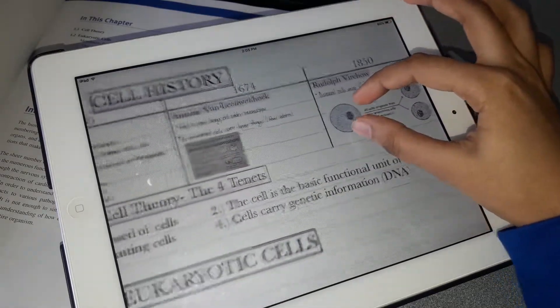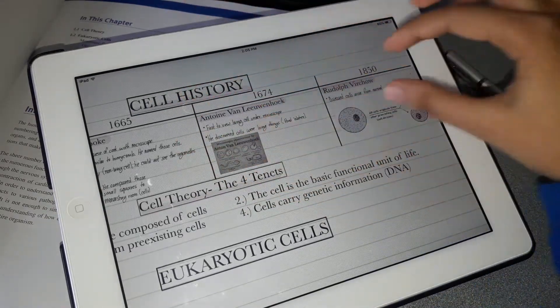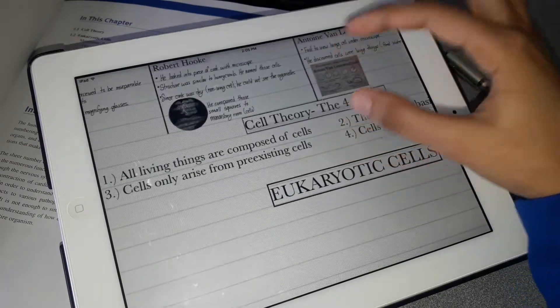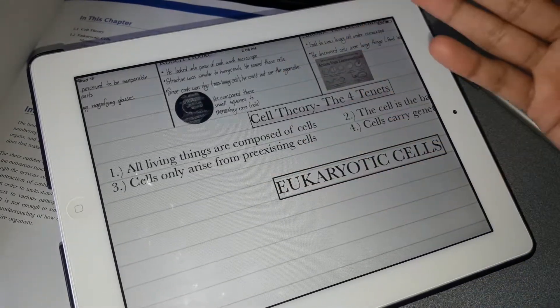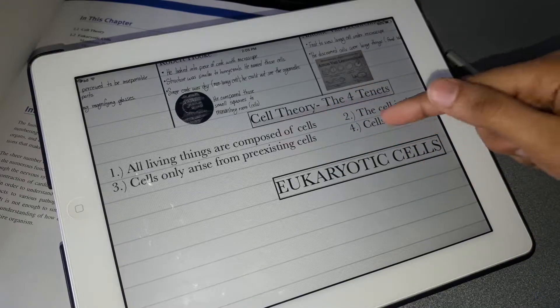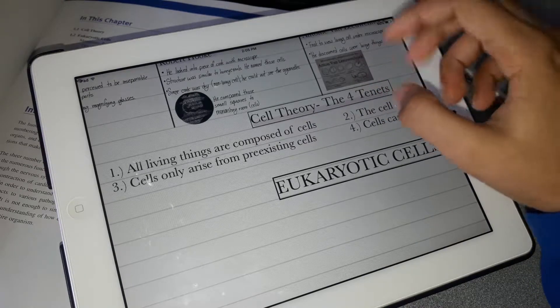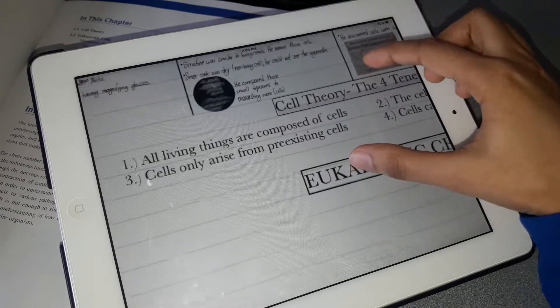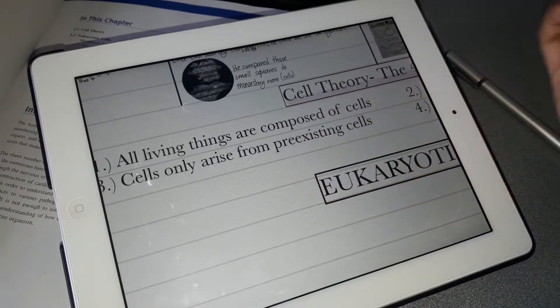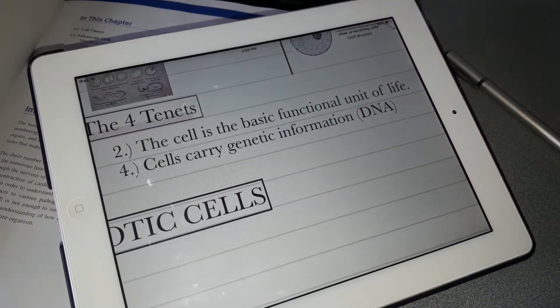After those discoveries, this was the basic timeline of how cells were discovered. Now we'll go over the cell theory. There are actually four cell theories - three were discovered before, and the fourth one was discovered after. The first theory is that all living things are composed of cells. The second is that the cell is the basic fundamental unit of life.